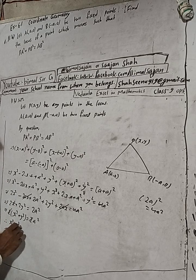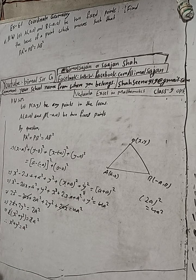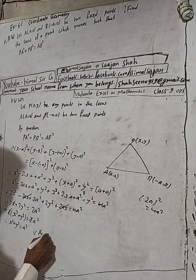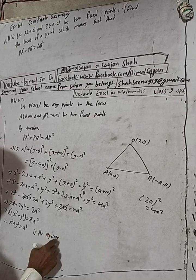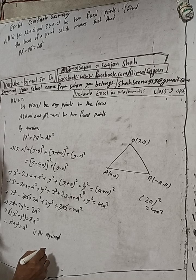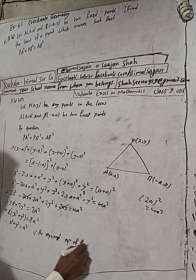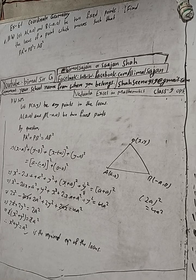Therefore x² + y² = a² is the required equation of the locus. This matches the book answer: x² + y² = a². This is our correct answer.